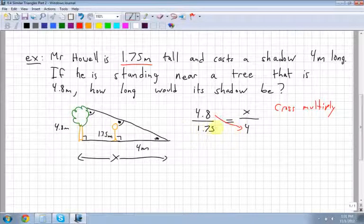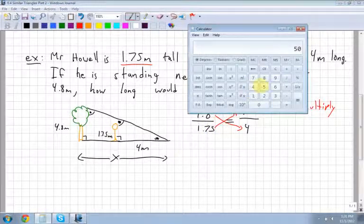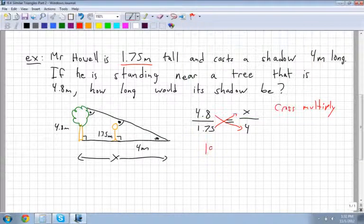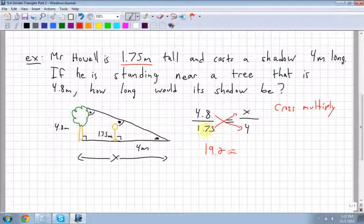I also multiply the 1.75 by the x at the top. So 4.8 times 4 is 19.2 equals 1.75x.